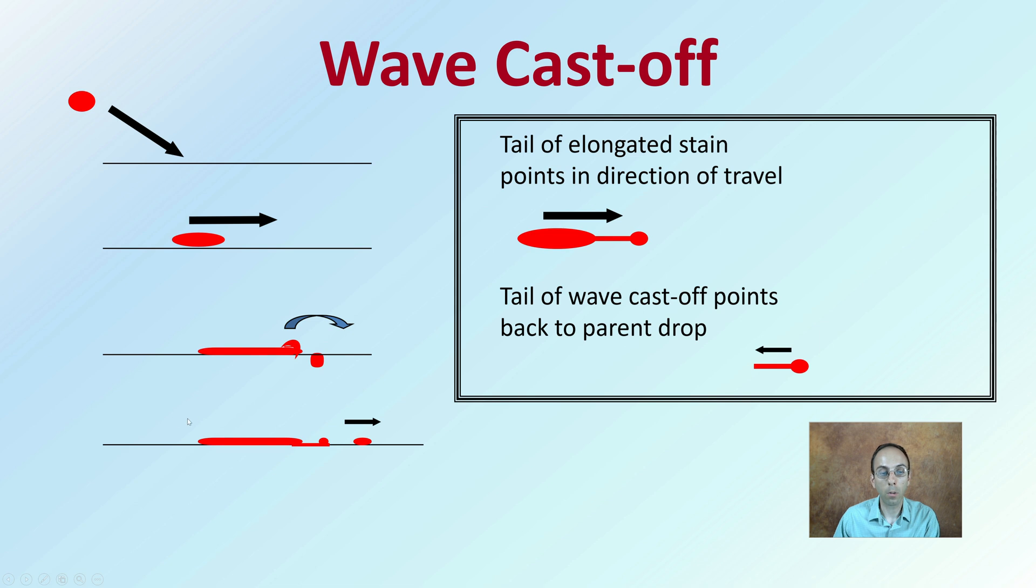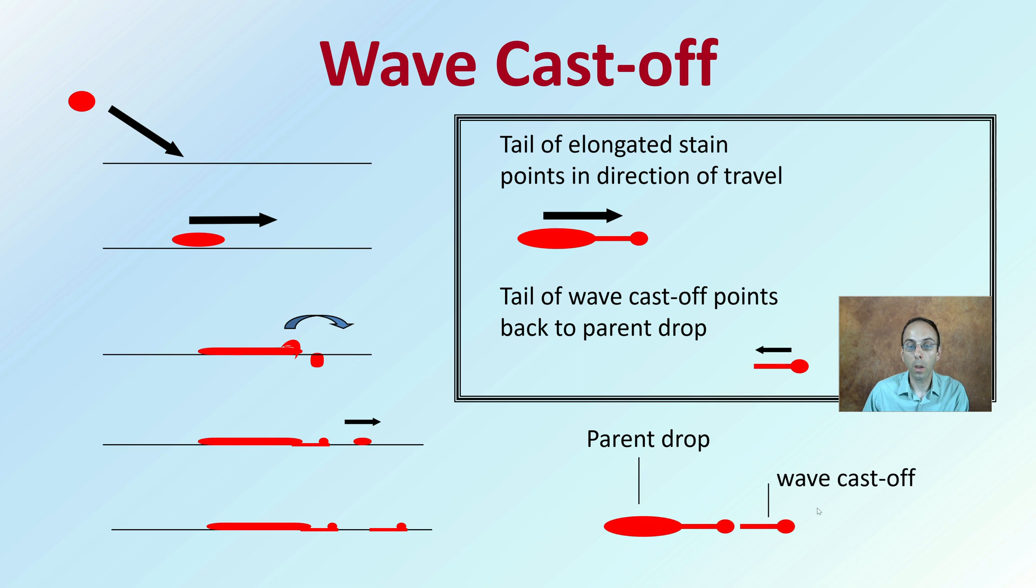You can see the direction of travel there. You can see the parent drop and the wave cast-off here, pointing the direction of travel of that blood.